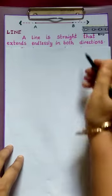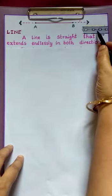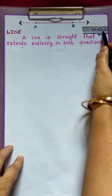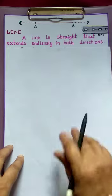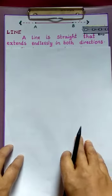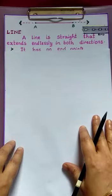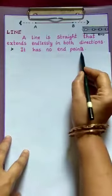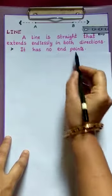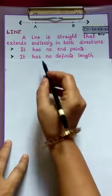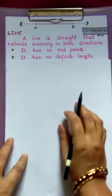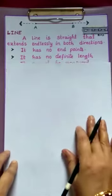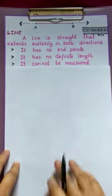Children, for example, when you are traveling on a road, if you observe the path, no end on both directions, which gives an idea of line. As the line is represented here with arrow heads, it has no end points. As the line has no end points, it has no definite length. As the line has no definite length, it cannot be measured.